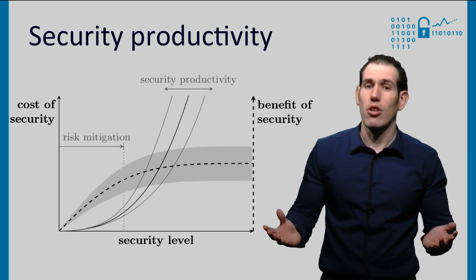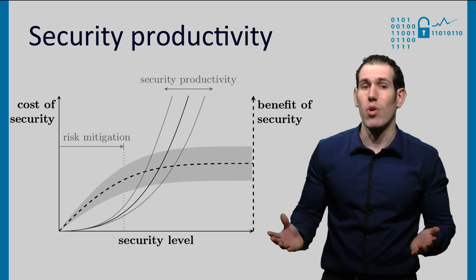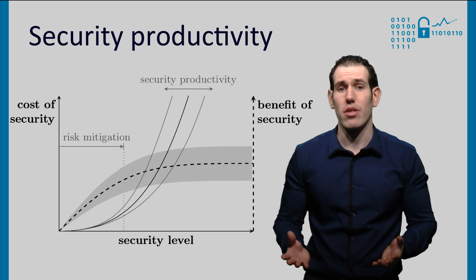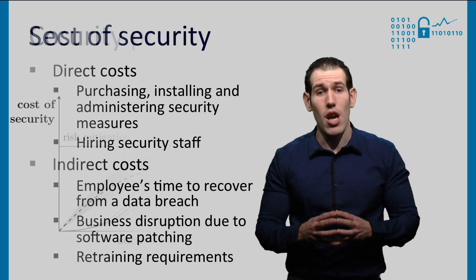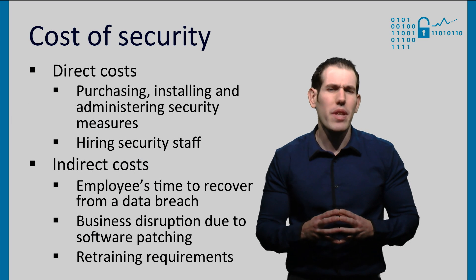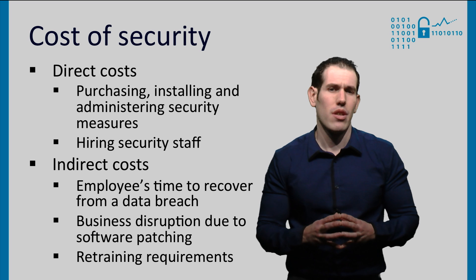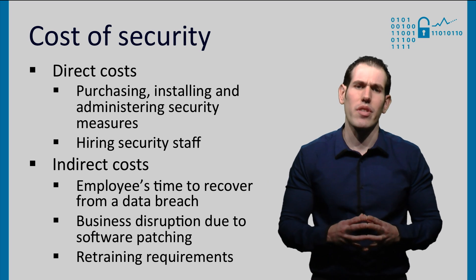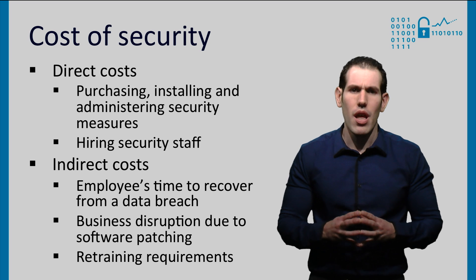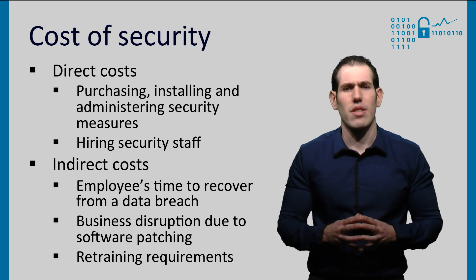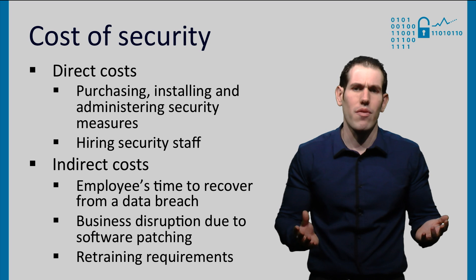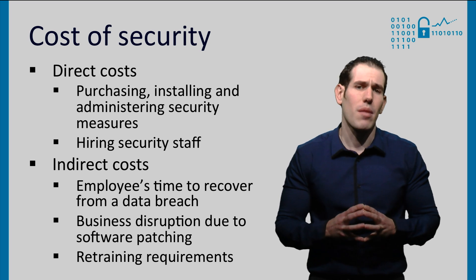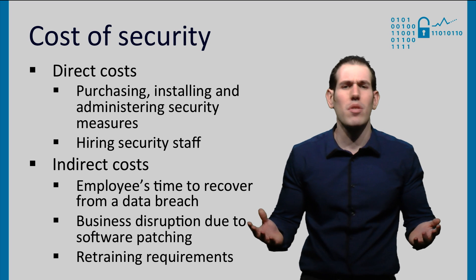But this is the conceptual model — the theory. Now, how can these three variables actually be measured? Cost of security appears to be the most straightforward variable to measure. Direct costs include purchasing, installing, and administering security measures. Think of acquiring products such as firewalls or antivirus software, but also think about user training, awareness campaigns, or staffing an incident response team.